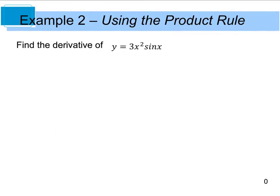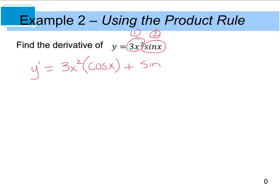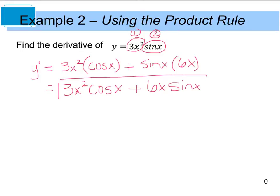Now for example 2, we have find the derivative of y equals 3x squared times sine x. You have to be careful with these because some people forget that 3x squared and sine x are really products. So 3x squared is our first function and sine x is our second function. So y prime is equal to the first, which is 3x squared, times the derivative of the second, which gives us cosine x. Then we add that to the second function, which is sine x, times the derivative of the first, and the derivative of 3x squared gives us 6x. So we have 3x squared times cosine x plus 6x times sine x. You could factor a 3x out, however on the AP test, don't risk making that mistake unless you absolutely have to.